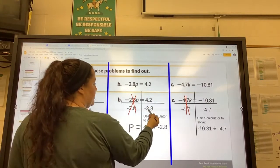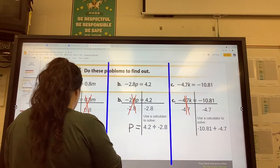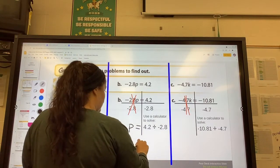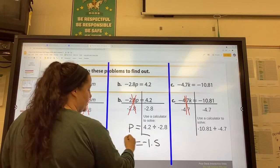and then we have 4.2 divided by 2.8. I'm just going to plug 4.2 divided by 2.8 on my calculator. I know that equals 1.5, but then I have one negative, so this will be negative.